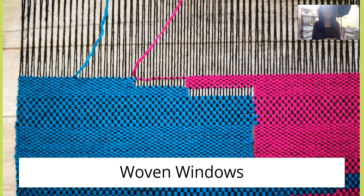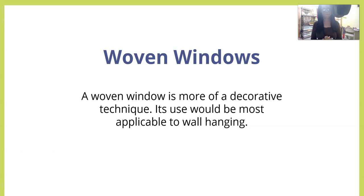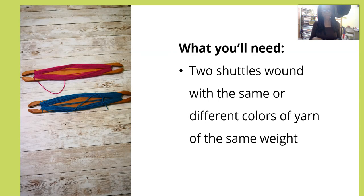Next up we have woven windows. A woven window is more of a decorative technique, and you'd probably want to use it on something like a wall hanging — something that's not going to get a lot of use — because you don't want someone to accidentally pull one of those exposed warp threads.